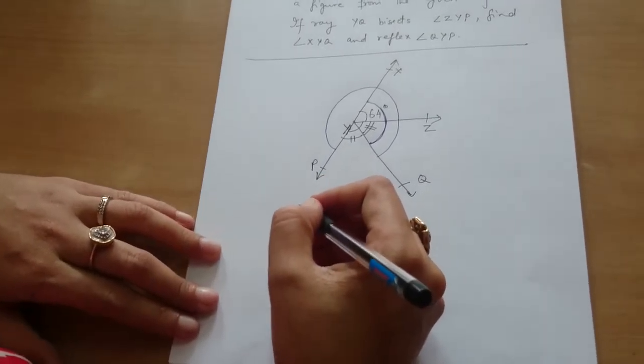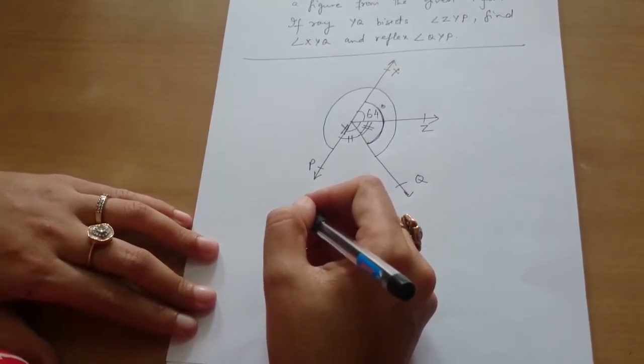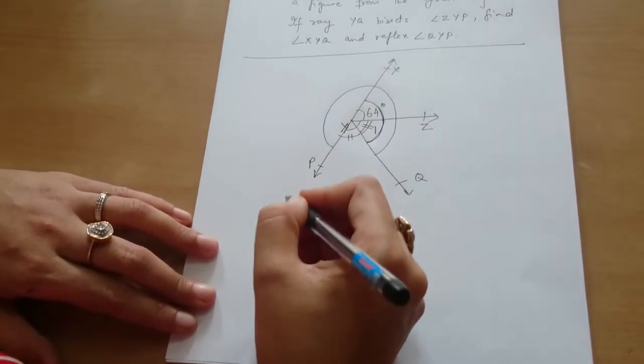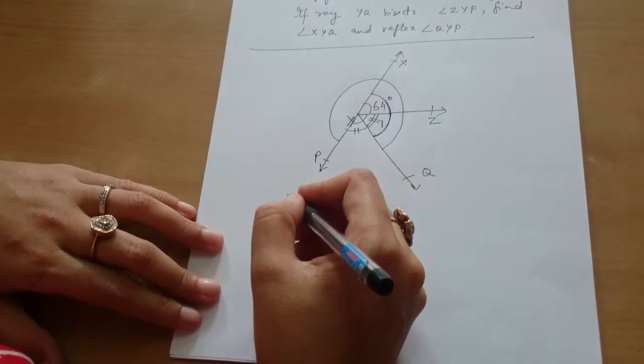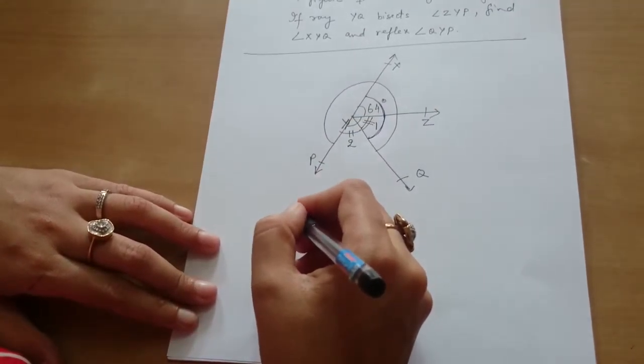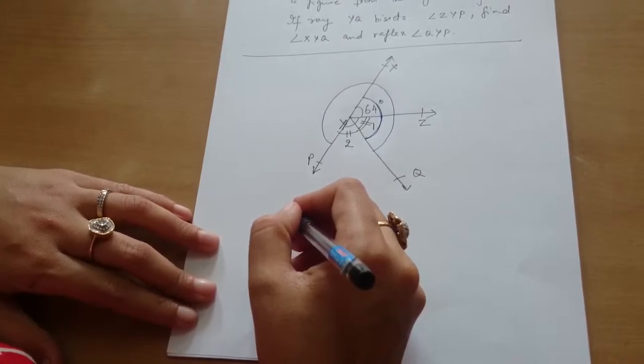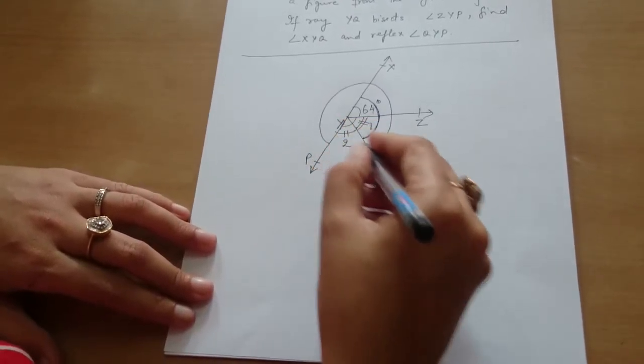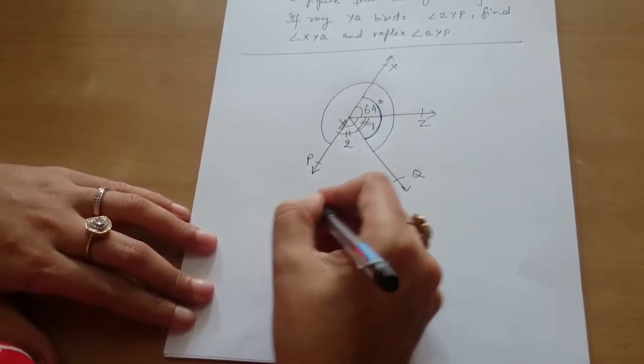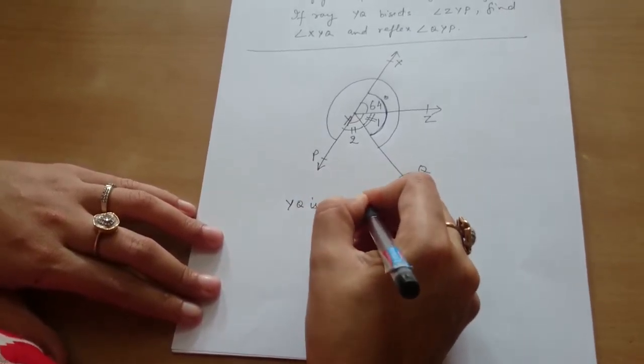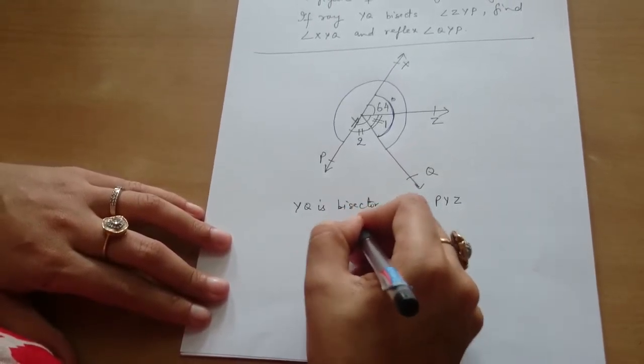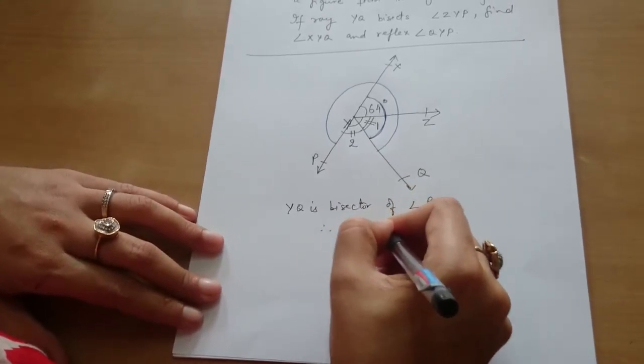First, for our convenience, we can assume angle ZYQ as angle 1. This is angle 1. And angle QYP as angle 2. And it is proved that angle 1 is equal to angle 2. It is given because YQ is bisector of angle PYZ. Therefore, angle 1 is equal to angle 2.